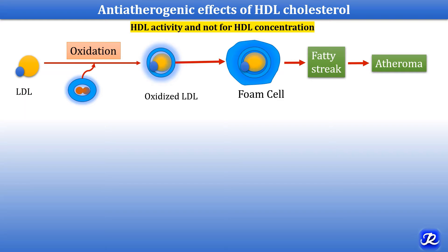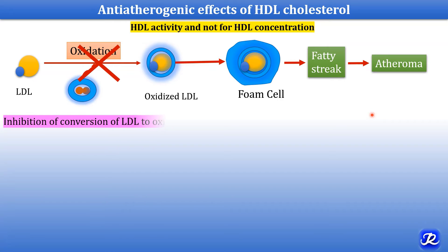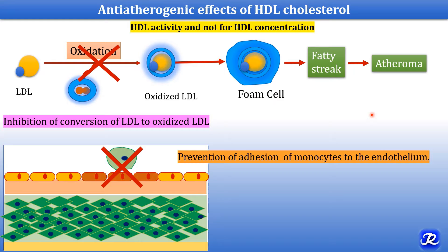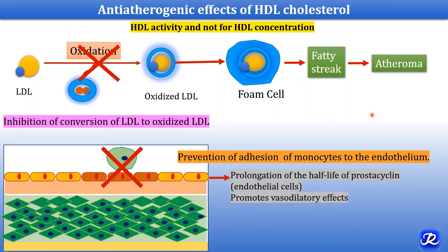Decreased HDL cholesterol is an important risk factor for atherosclerosis. HDL concentration should be more than 40 mg/dL, but activity is more important than concentration. HDL is anti-atherogenic: it prevents the conversion of LDL to oxidized LDL, prevents adhesion of monocytes to the endothelium, and prolongs the half-life of prostacyclin released by endothelial cells, promoting vasodilatory effects. By these three mechanisms, HDL cholesterol is anti-atherogenic.